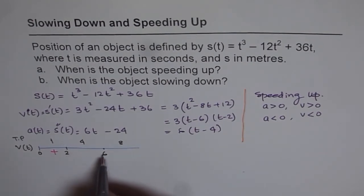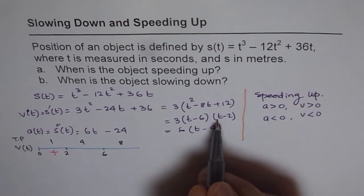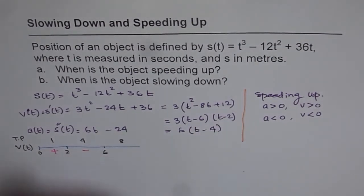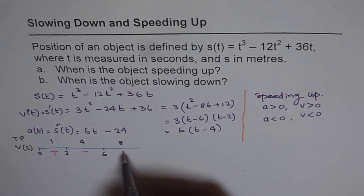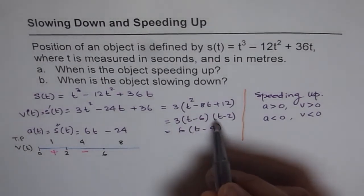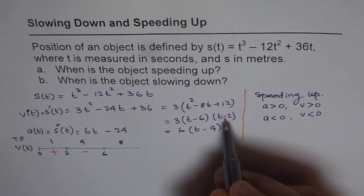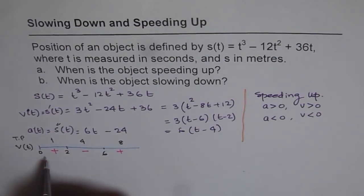For the interval (2, 6), taking test point t = 4: (4 - 6) is negative and (4 - 2) is positive, so multiplying gives a negative result. For t greater than 6, taking test point t = 8: (8 - 6) = +2 and (8 - 2) = +6, both positive, so velocity is positive. Therefore velocity is positive in (0, 2) and after 6, and negative in (2, 6).